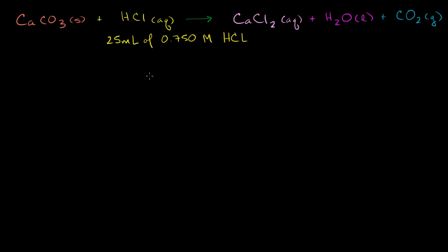Before we do any stoichiometric problems, we have to make sure that our actual equation is balanced. So let's do that first. On the left-hand side, we've got one calcium, and on the right-hand side we only have one calcium — so everything looks good from the calcium point of view. We have one carbon on the left-hand side and one carbon on the right-hand side. Everything looks good so far.